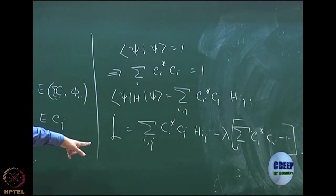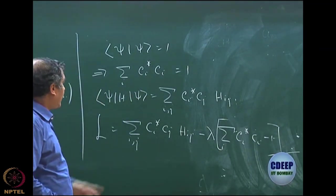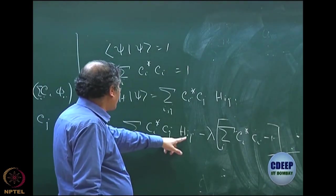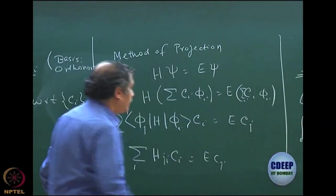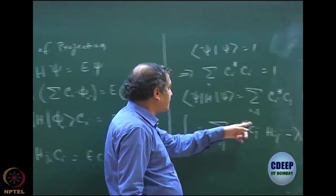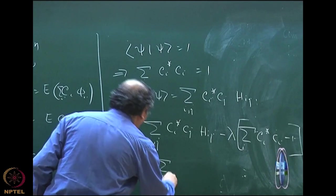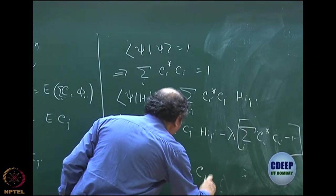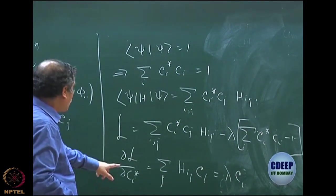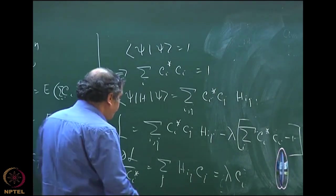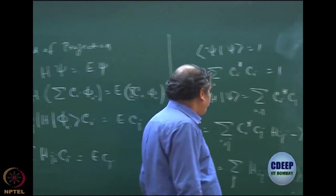Varying with respect to one particular C_k gives: sum over j of H_kj C_j = lambda times C_k. So lambda becomes your E. Note that when I write H_ij it means <phi_i|H|phi_j>. When you vary with respect to C_i*, you get: sum over j H_ij C_j = lambda times C_i. It is one and the same thing — just an i,j index interchange — and you get the same eigenvalue equation as before.